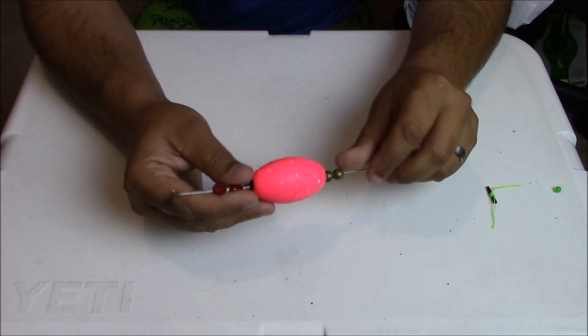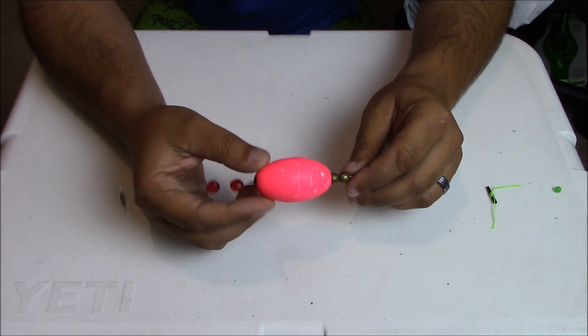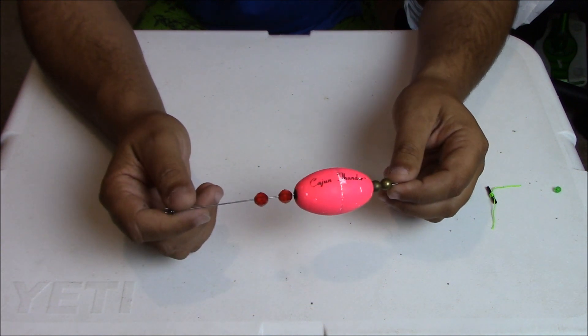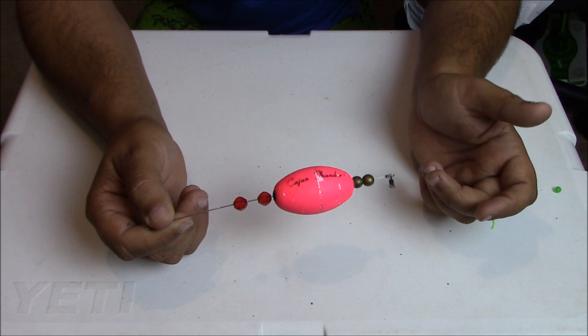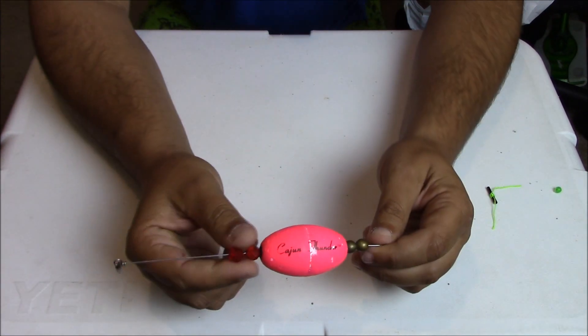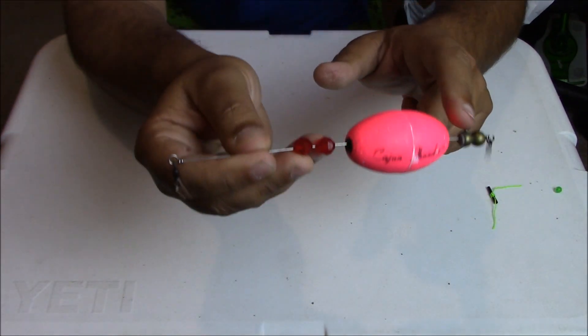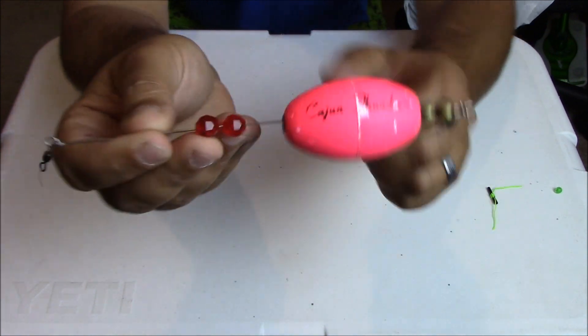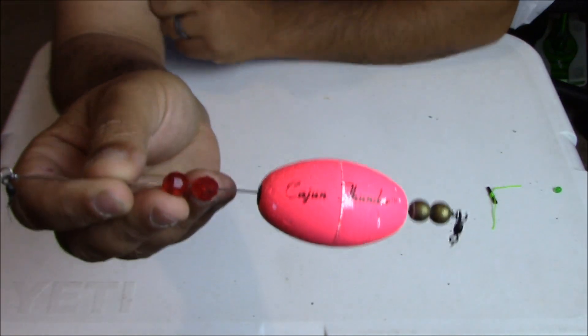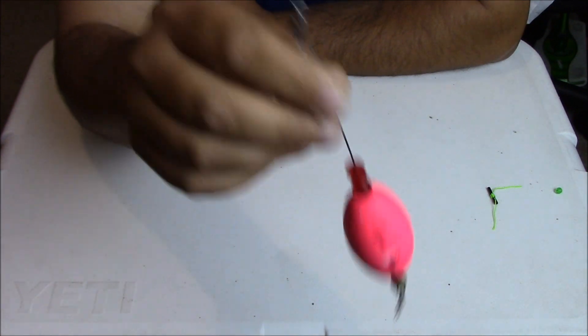This first one is one that you can get pretty much any local sporting goods store. Walmart carries these, they're relatively inexpensive. You got your glass beads on top, you got your brass beads on the bottom.